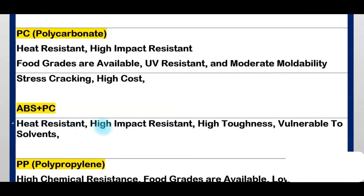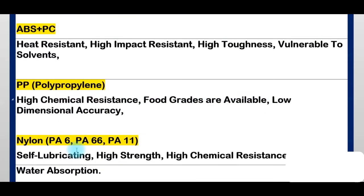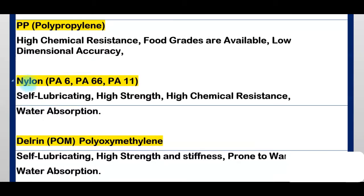PC plus ABS: heat resistance, high impact resistance, high toughness, but vulnerable to solvents. PP — Polypropylene: high chemical resistance, but low dimensional accuracy.